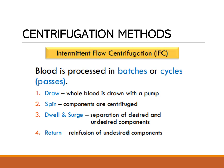For apheresis, we subject blood components to different centrifugation methods. The first is intermittent flow centrifugation (IFC), where blood is processed in batches or cycles. The steps are: draw — whole blood is drawn using a pump; spin — the blood is centrifuged; dwell and surge — separation of desired and undesired components; and return — unneeded components are re-infused back to the donor. For IFC, there is only one venipuncture site used for both removal and re-infusion.